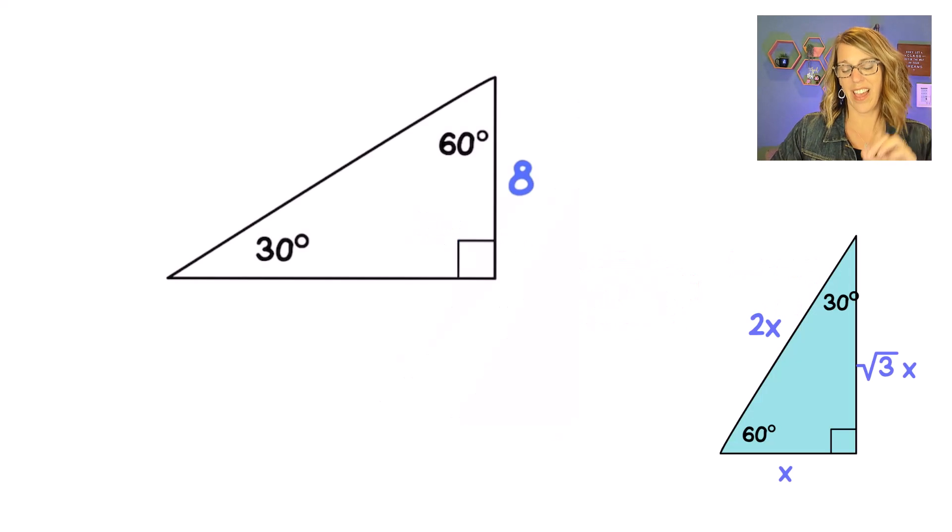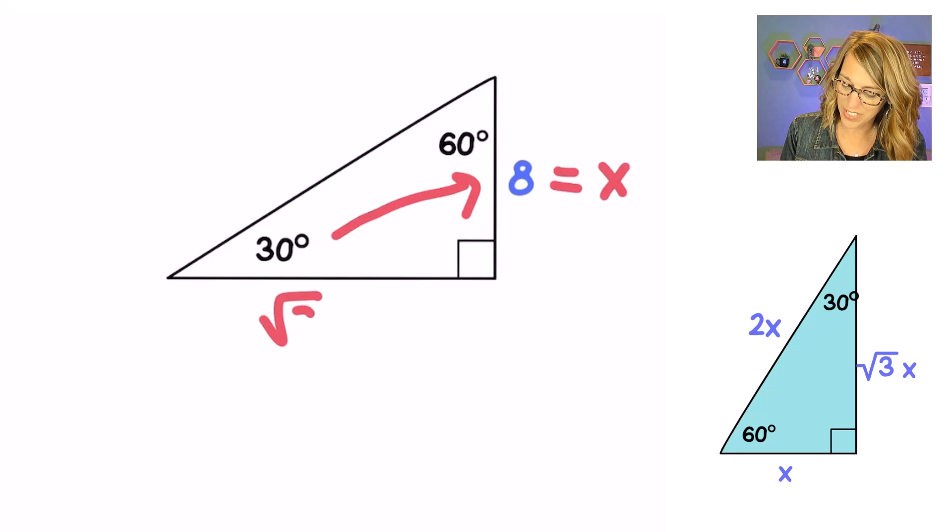In this next triangle we've got a side of length 8 and that side of length 8 happens to be across from the 30 degree angle which means it's the shorter side. So that means that 8 is equal to x and I know that my longer side is going to be the square root of 3 times x.